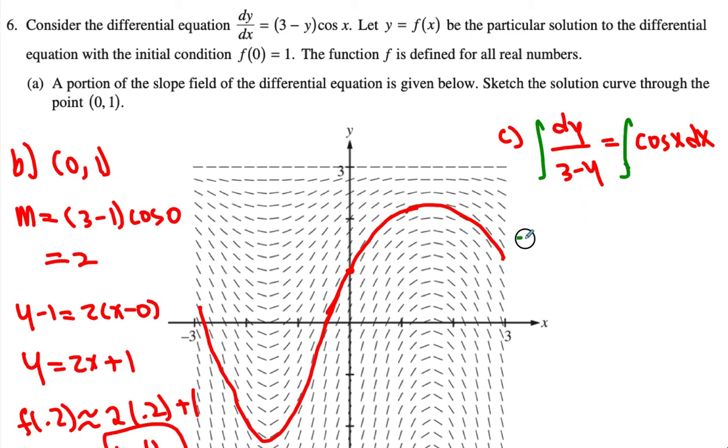Then here I get negative because of the chain rule in front of y, and then natural log of (3 minus y) equals sine of x plus c. Then I get to realize that ln of (3 minus y) equals negative sine of x plus c.